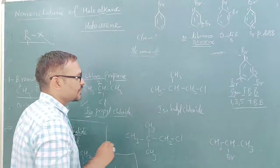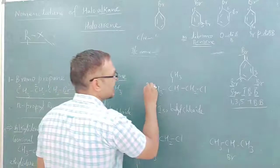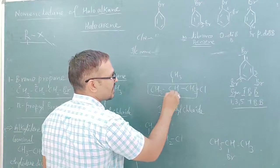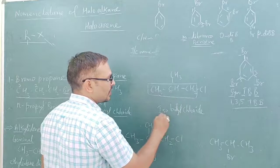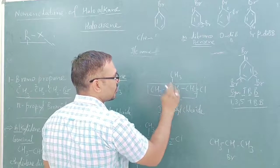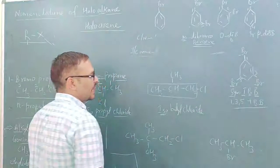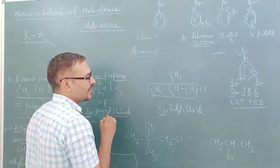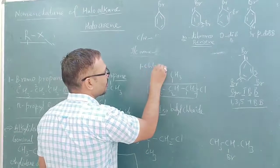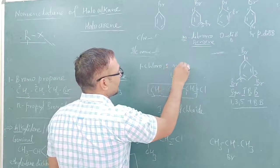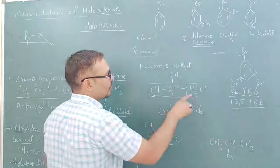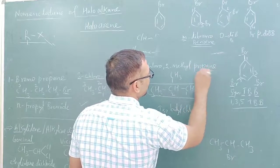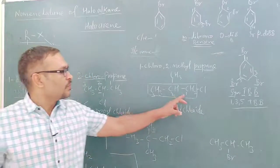On the other hand, select the longest chain. Here also 'iso' applies because a tertiary carbon is present. Total carbon count: 1, 2, 3, 4 — butyl. Chlorine is present, so chloride. For IUPAC name, numbering: 1, 2, 3. At first position is chlorine — 1-chloro. At second position is a methyl group — 2-methyl. Total carbons in main chain: three — so propane.